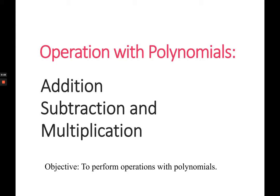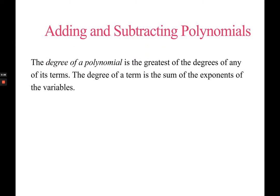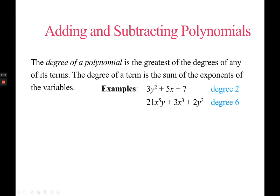Let's begin with your terminologies. We have degree of a polynomial. It is the greatest of the degrees of any of its terms. The degree of a term can also be the sum of the exponents of the variables of each term. For example, you have 3y squared plus 5x plus 7 — it is degree 2 because that's the highest exponent. If there are two variables in each term, the reason why we have degree 6 is because y has an exponent of 1 plus 5, and so you get 6.